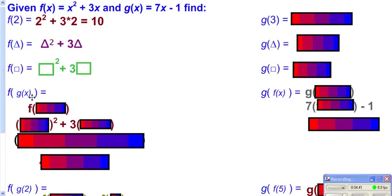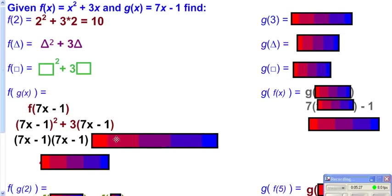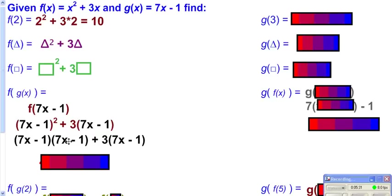For f of g of x, g of x is 7x minus 1. So we go to f and replace both x's with the entire expression 7x minus 1. You get 7x minus 1 squared, plus 3 times 7x minus 1. Since there's a plus or minus inside, you cannot apply the square to each term separately — you have to FOIL out 7x minus 1 times 7x minus 1. Distribute through the 3 and collect like terms, and you end up with 49x squared plus 7x minus 2.